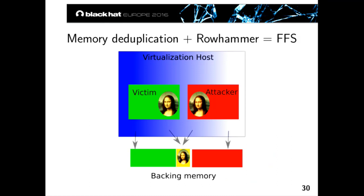Put the two together and you can see how Flip Feng Shui works. If you've picked a target page in the victim VM and decided which bit to flip, you find a piece of physical memory that produces the right bit flip at the right page offset, then force the victim VM to use that part of physical memory — using memory deduplication. The victim stores the Mona Lisa in the same physical page as the attacker. The attacker does Rowhammer in their own VM, and both the physical memory and therefore the victim's page get the curly mustache.